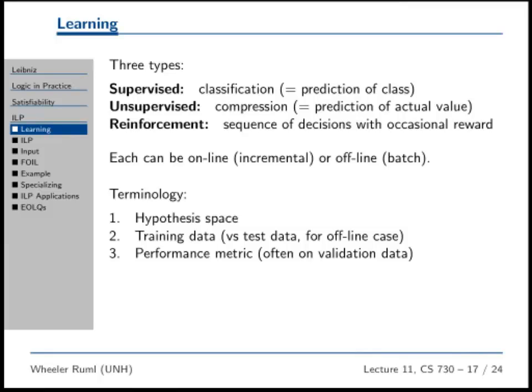Reinforcement learning is the third kind of learning, and that's where you're acting — taking actions and things either work out or they don't. You get reinforcement at the end. Like good dog, bad dog kind of stuff. That's assignment four — you're going to build a reinforcement learning agent, put it in the world, it's going to feel pain, and it's going to get better over time.